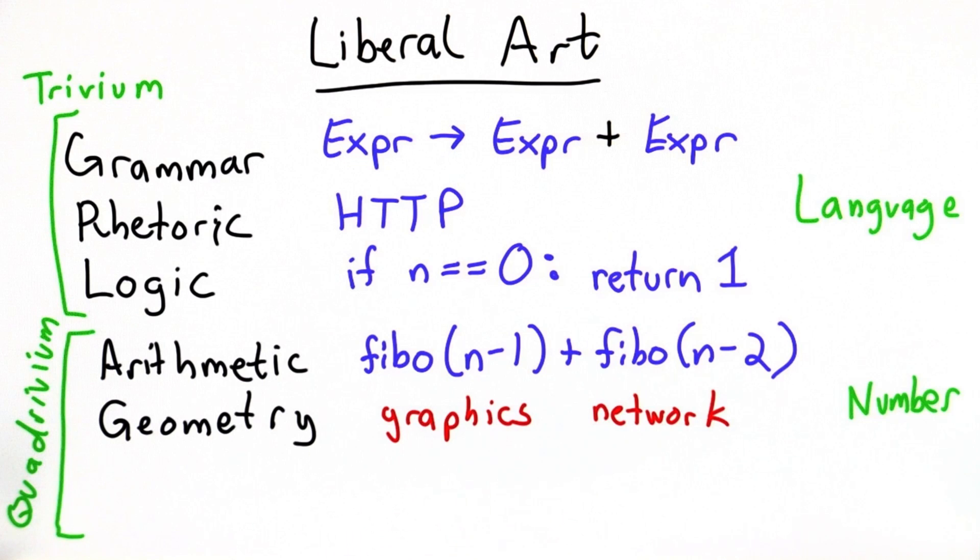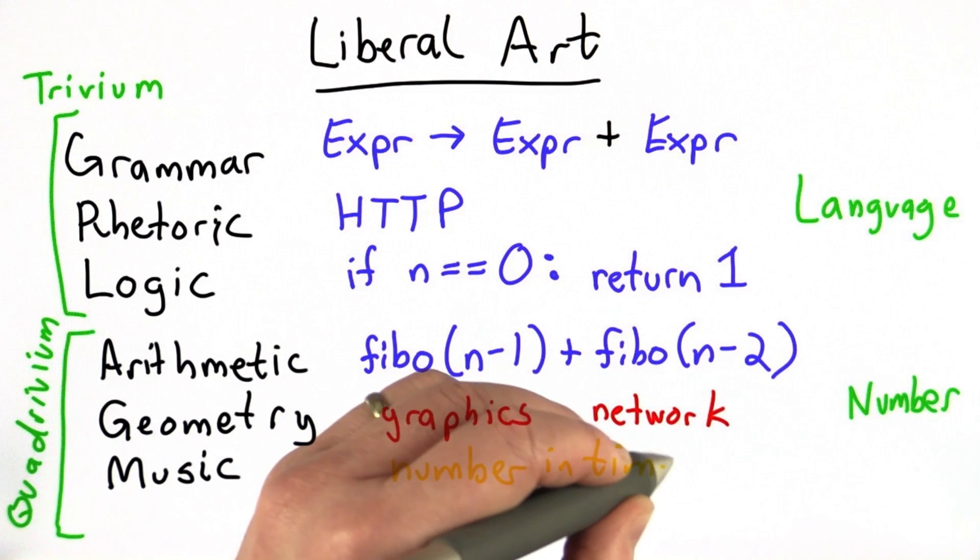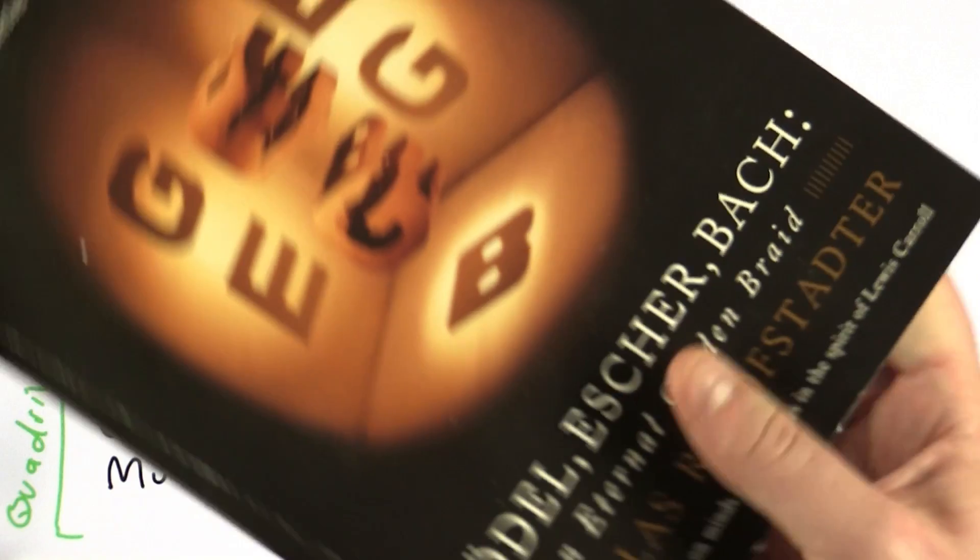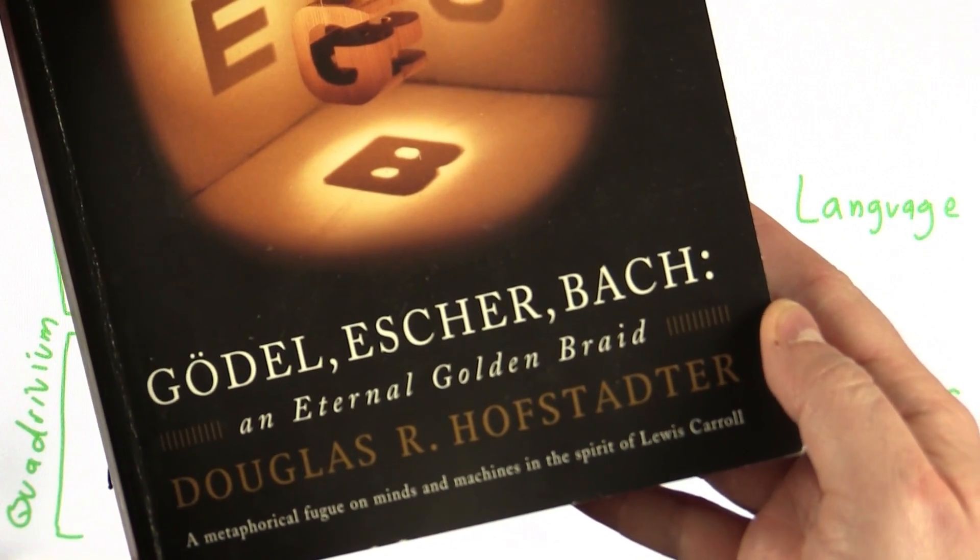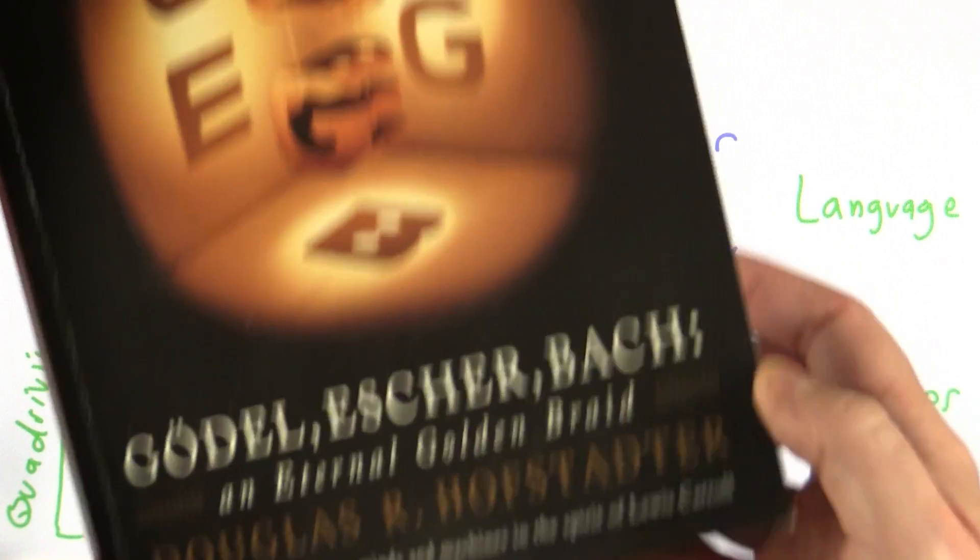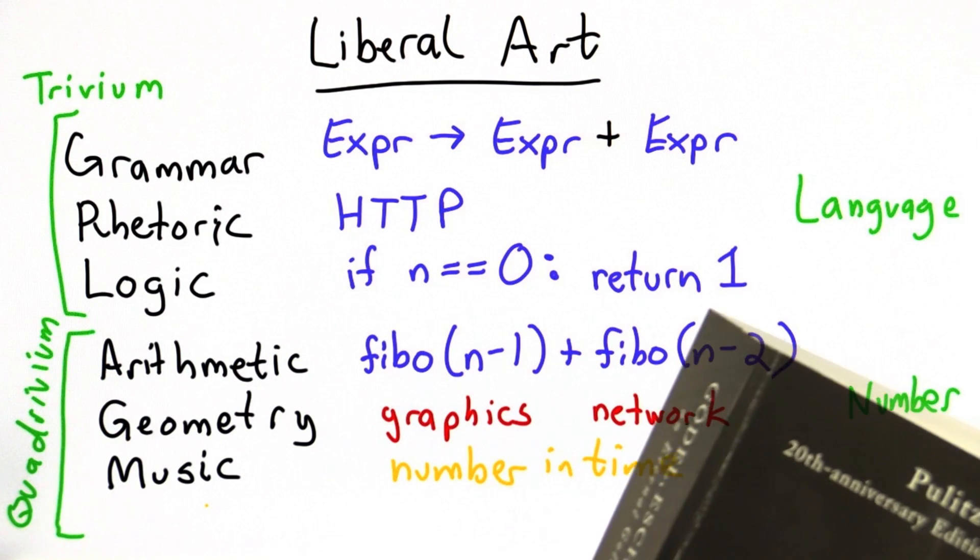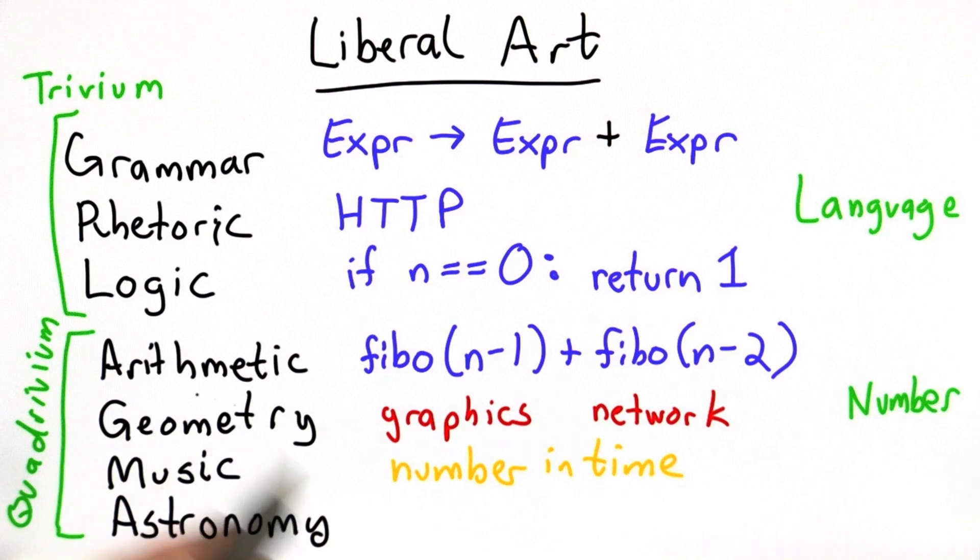But we didn't get to either of those things too much in this class. Music, which is about number in time. And we haven't really seen how computing relates to music very much in this class, but certainly recursion occurs all over the place in music. If you don't believe me, I would encourage you to read this book by Douglas Hofstadter called Godel, Escher, Bach. And it's all about how the logic of computing relates to things in both the art of Escher and the music of Bach. And the final traditional liberal art was astronomy. We haven't seen that directly in this class either, but certainly almost all astronomy today depends on computing.